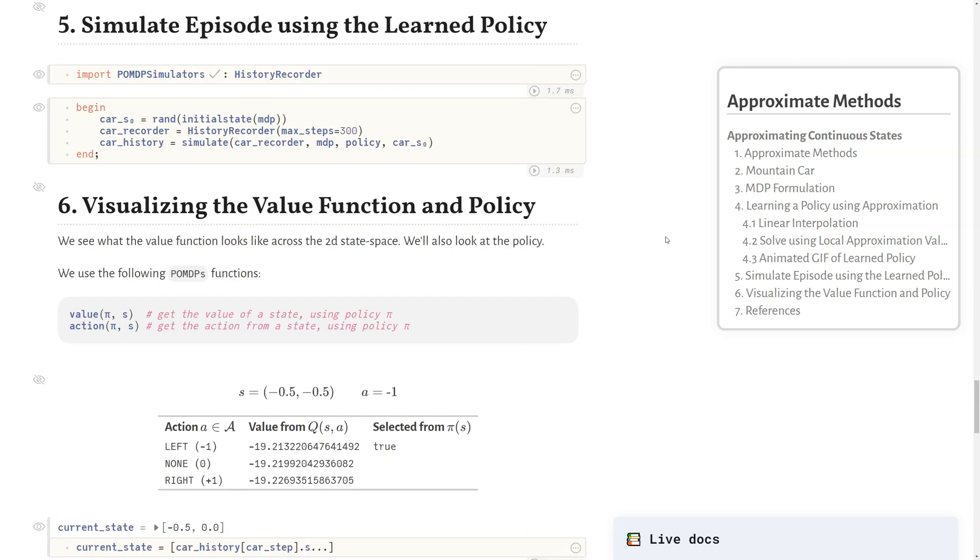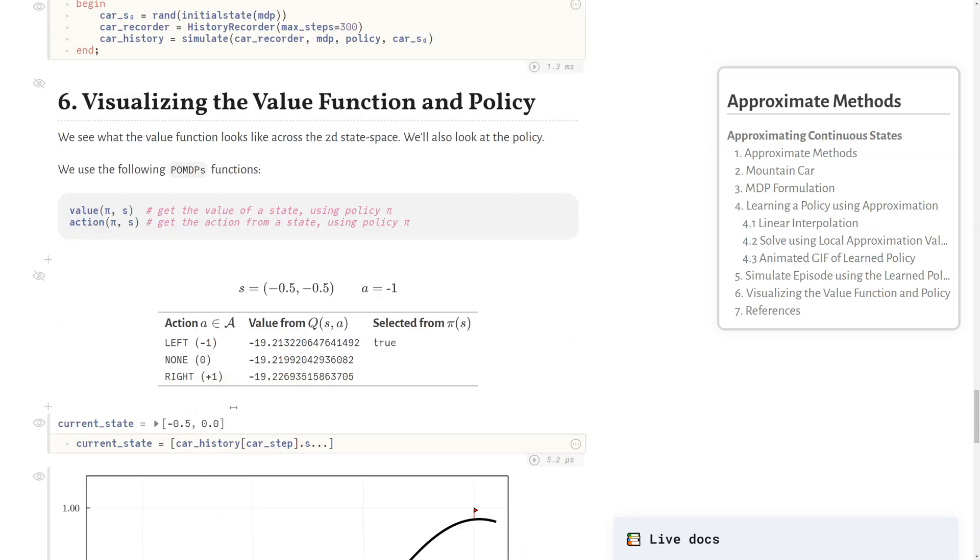Now let's simulate an episode and look exactly at what's happening in the value function space and what's happening with the policy. We'll get the history recorder from POMDP simulators, get some random initial state which is actually deterministically positioned, and create that history recorder which we'll use to simulate our MDP given that policy and given that initial state. We have this collection of histories or steps in a history. We'll use the value and the action function that come from the POMDP's interface to evaluate our policy at a particular state and see what the action is at a particular state.